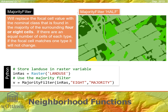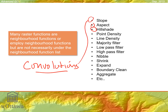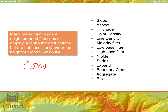There are many raster and neighborhood functions employed in spatial analyst tools that use convolutions of various kinds — slope, aspect, hillshade, point densities, majority filter, low pass filter, high pass filter. Neighborhoods are also used in nibbling, shrinking, expanding, cleaning boundaries, and aggregating. A lot of these you don't define your own neighborhood for because it's part of the built-in algorithm, but neighborhood functions are used in a lot of things in ArcGIS Pro.